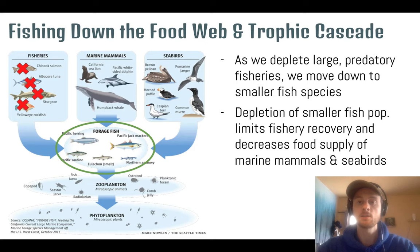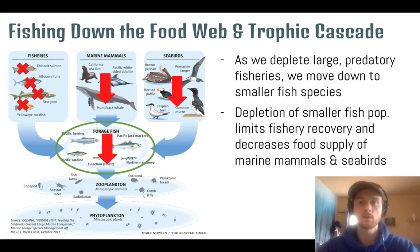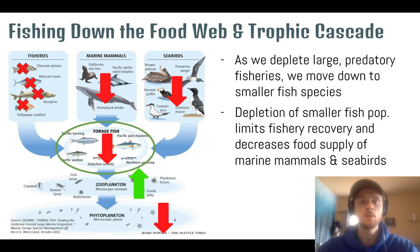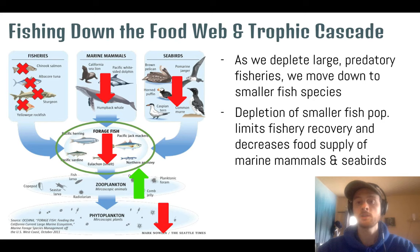As forage fish populations decrease from overfishing, that also reduces the food source for large marine mammals and seabirds, causing them to suffer as well. The trophic cascade continues below: with fewer forage fish to eat them, zooplankton populations dramatically increase, which in turn causes phytoplankton populations to decrease. Since phytoplankton are the base of the food web and consumed by many other organisms, this creates cascading ripple effects on species throughout the ecosystem.